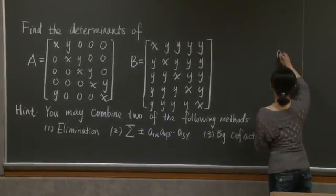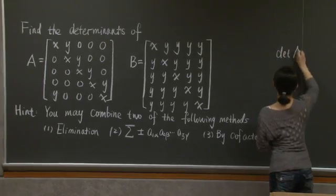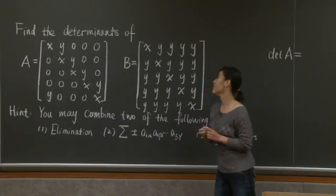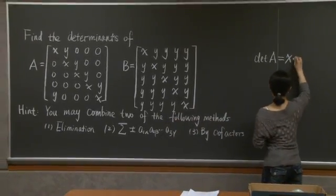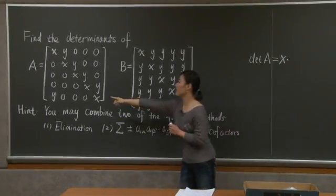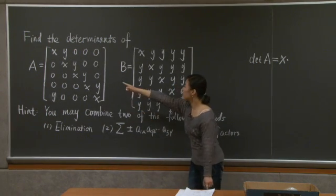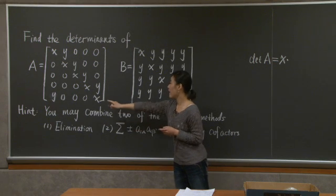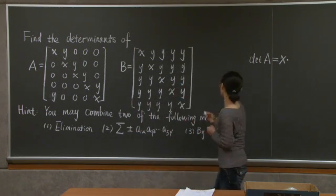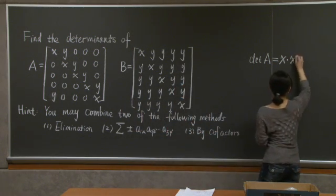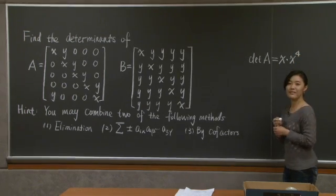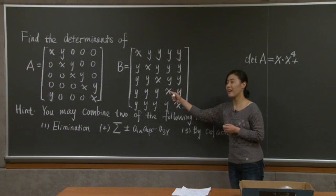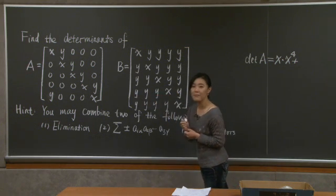So determinant of A is equal to the 1, 1 entry of A, which is x, times the cofactor of that spot, which is the determinant of the left over 4 by 4 matrix. And it's upper triangular, so its determinant is simply given by x to the power of 4, right?